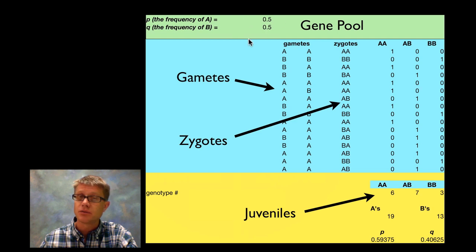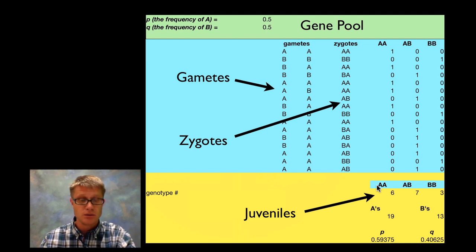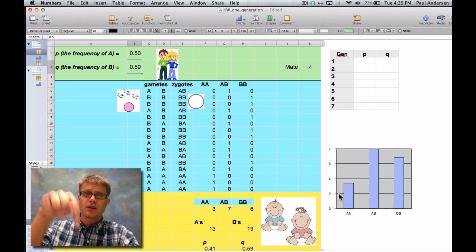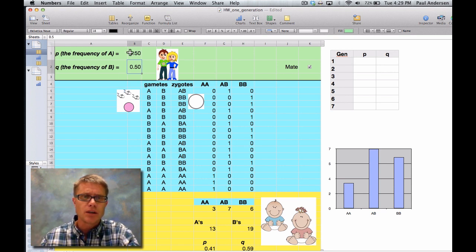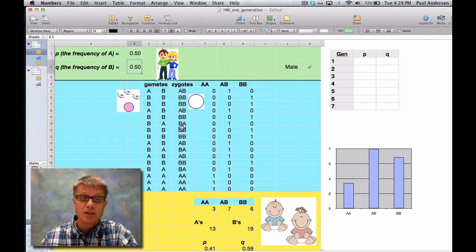We're going to use this spreadsheet here. You start by entering allele frequencies — in this case we'll start with 0.5 and 0.5 for each allele. The spreadsheet will then generate gametes, those gametes fertilize to form zygotes, and that eventually makes juveniles. So we're going through the life cycle using a spreadsheet. I'll try to put a link to the spreadsheet I'm using below the video so you can try it on your own. Right up here we start with a population where the frequency is 0.5 and 0.5 — think of this as the gene pool, these are the adults, and generation 1 has those frequencies.